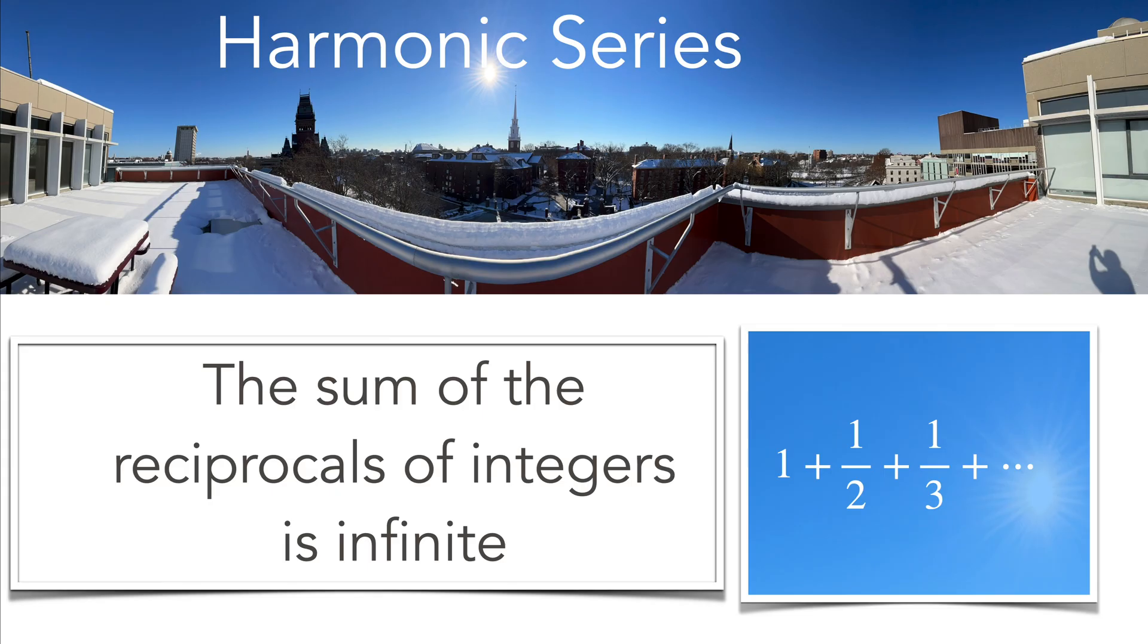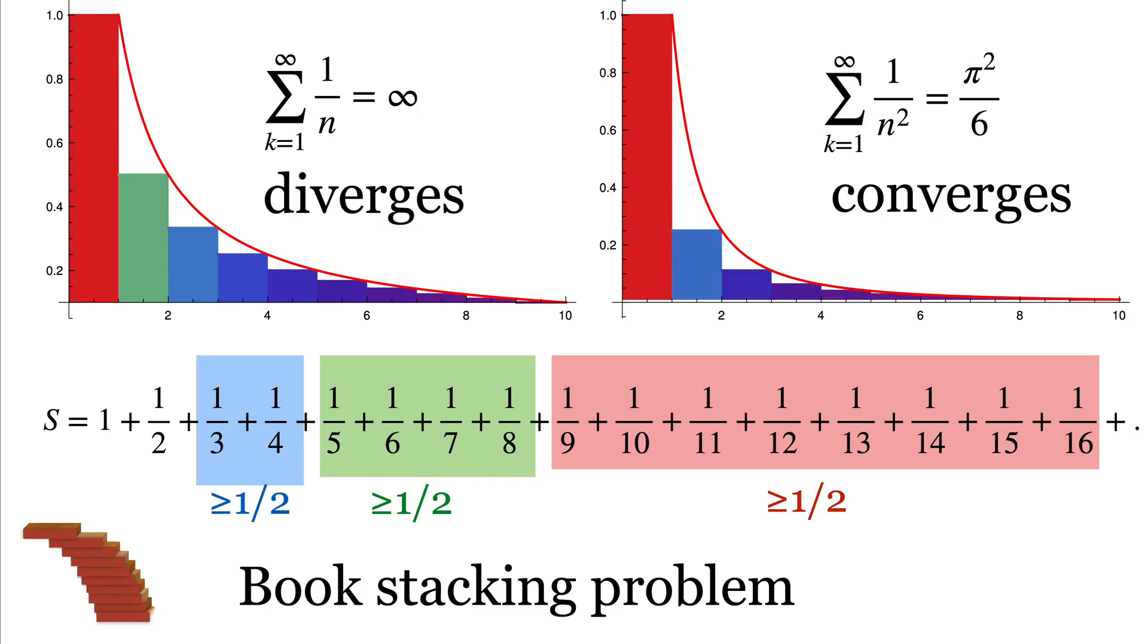Harmonic series diverges. Sum of the reciprocals of the integers is infinite. You can easily see that by just grouping the terms together in a nice way, but it has astounding consequences like the book stacking problem, which allows you to build bridges of arbitrary length so that the center of mass is always on the base brick.